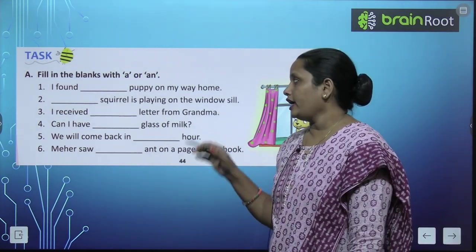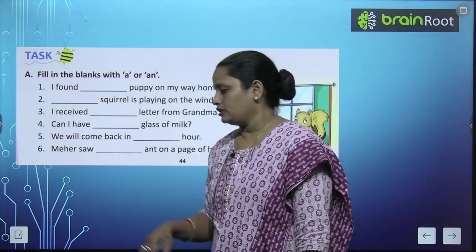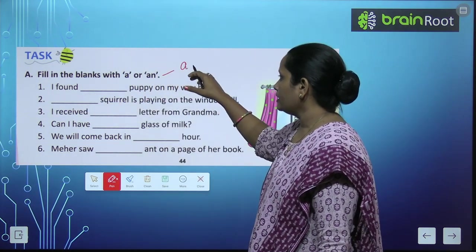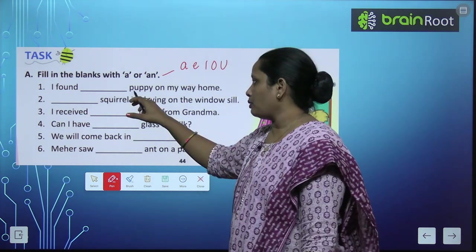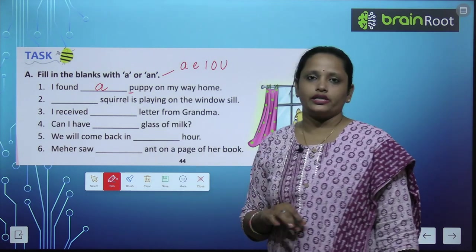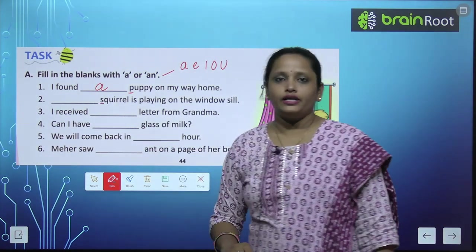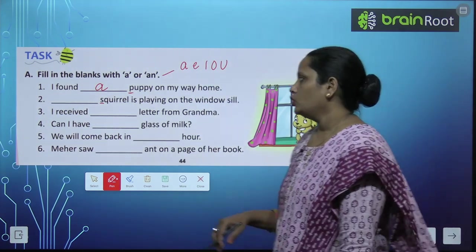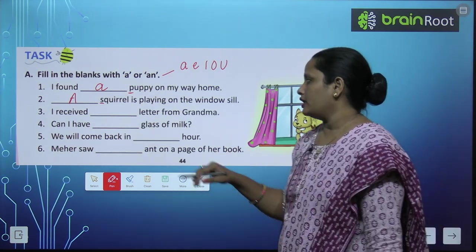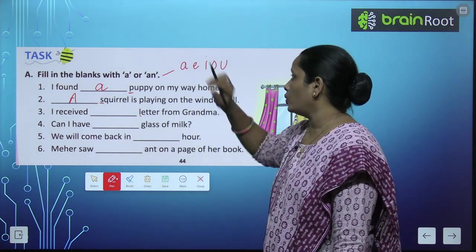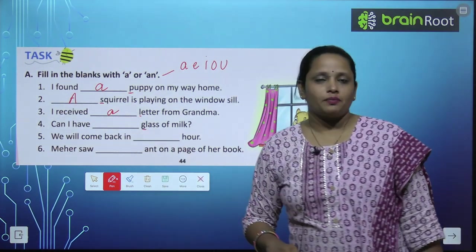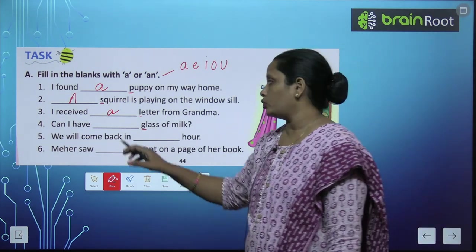Now let's fill in the blanks with 'a' or 'an'. 'I found ___ puppy' — a puppy, kyunki puppy ka pahla letter P hai, consonant hai, toh lagayenge 'a'. '___ squirrel is playing on the windowsill' — squirrel ka pahla letter S hai, toh lagayenge 'a squirrel'. 'I received ___ letter from grandma' — letter ka pahla letter L hai, toh 'a letter'. 'Can I have ___ glass of milk?' — G hai, toh 'a glass of milk'.